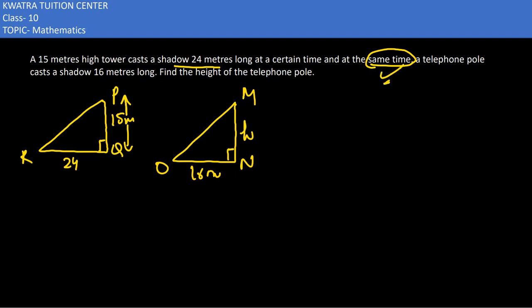The reason triangle PQR and MNO are proportional: angle Q and angle N are equal to 90 degrees, and obviously these two angles would be equal to each other - angle PRQ and angle MON - because they are being cast at the same time. So this means angle PRQ is equivalent to angle MON.